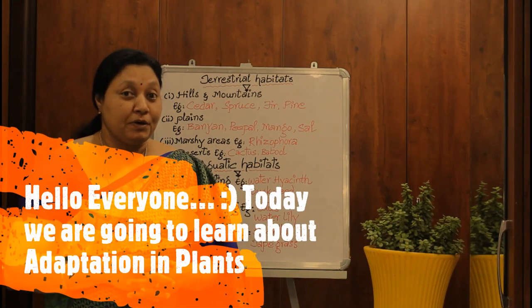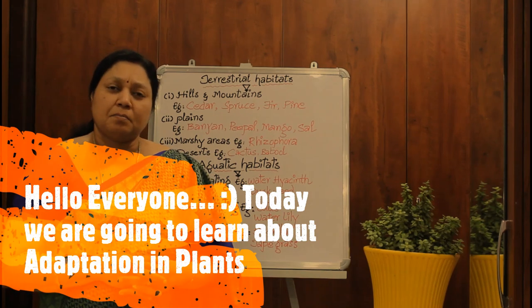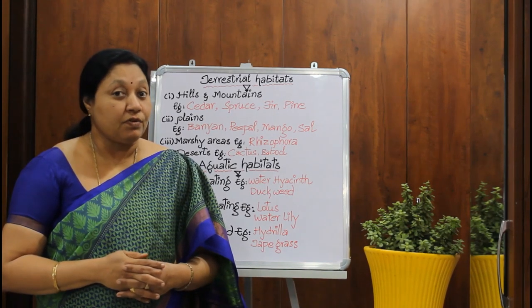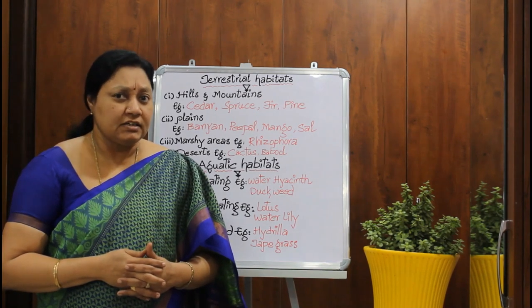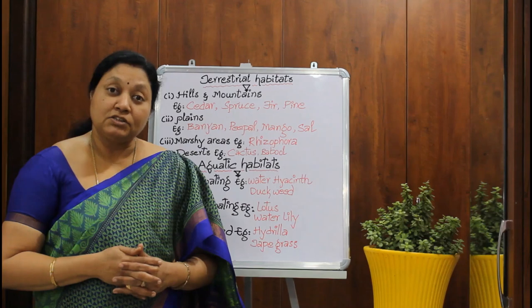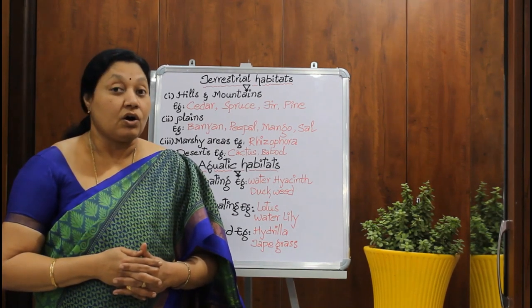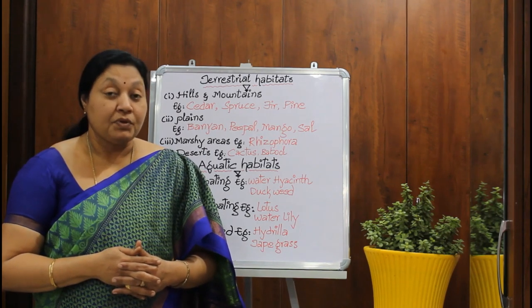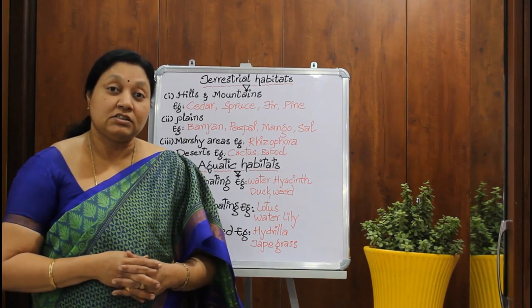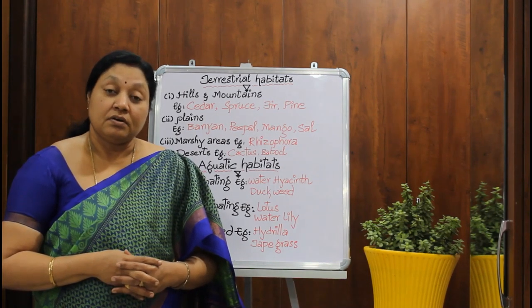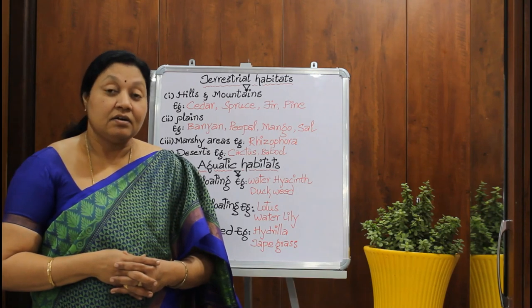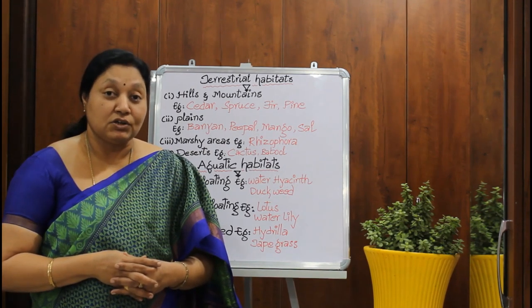Hello everyone. Our today's topic is adaptation in plants. Plants are found everywhere on the earth. However, the living conditions on all the parts of our planet are not the same. Some places get heavy rainfall, some places are extremely cold, some places are extremely hot, and some places are always covered with ice. Plants develop some special features in order to adjust with their surroundings. This ability to adjust with their surroundings is called adaptation.